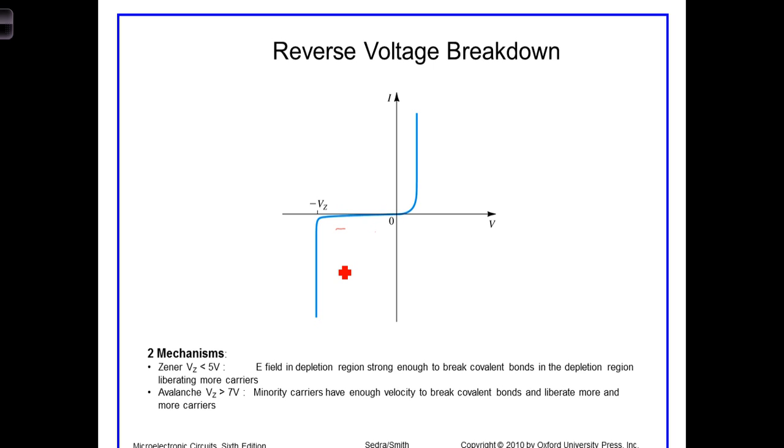The second mechanism is known as avalanche breakdown. This results at larger reverse voltages and arises when minority carriers constituting I-s have enough kinetic energy to break covalent bonds in atoms they collide with. These freed carriers are then swept by the reverse voltage across the depletion region and in turn collide with other atoms, liberating even more carriers and hence the name avalanche breakdown.